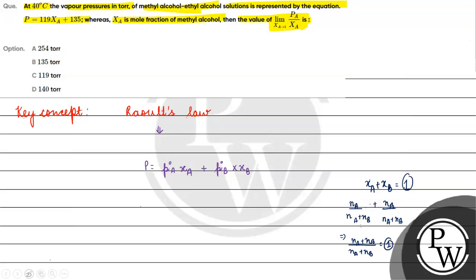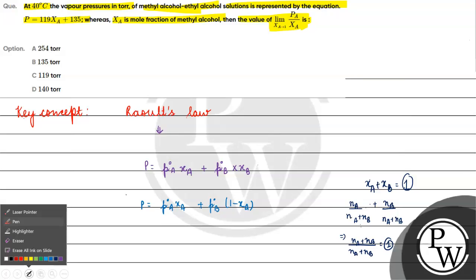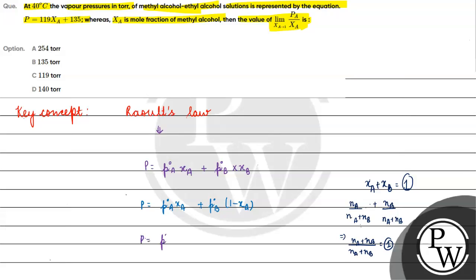Now chi B we can write as 1 minus chi A. So P equals P not A chi A plus P not B times 1 minus chi A, which will be P not A chi A minus P not B chi A plus P not B. This equals chi A into P not A minus P not B plus P not B.